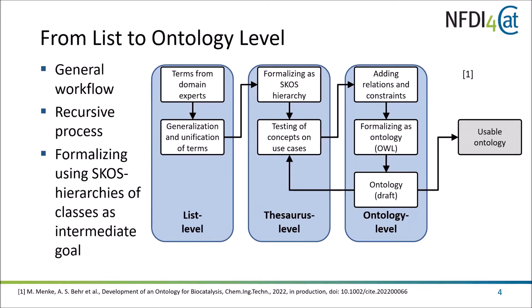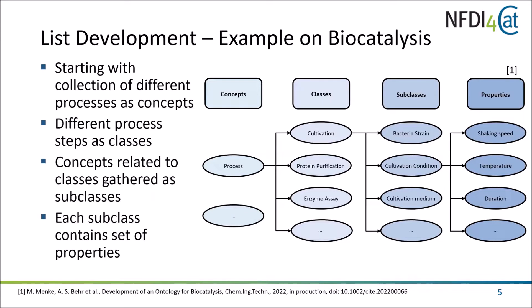Formalizing the SKOS hierarchies is our intermediate goal. Now I want to show how we started with list development on an example — biocatalysis. We started with a collection of different processes as concepts and tried to define them as classes. For example, we have the class 'cultivation' with subclasses 'bacterial strain' and 'cultivation condition.'